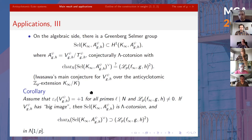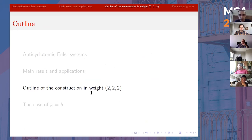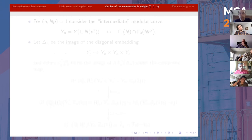These are the main result and main applications. With about 10 minutes left, I would like to give a brief outline of the construction of the Euler system. For simplicity, I'll focus on the case of weight (2, 2, 2, 2): G and H have weight two and Psi has infinity type (−1, 0), also corresponding to a form of weight two. The key idea is to look at the following intermediate modular curve. We have our capital N coming from the levels of the three forms involved, and we're going to add auxiliary levels to produce a class of conductor N for every N.